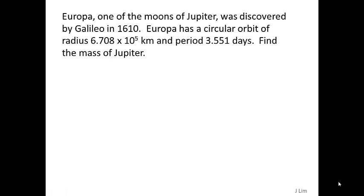Europa, one of the moons of Jupiter, was discovered by Galileo in 1610. Europa has a circular orbit of radius 6.708 × 10⁵ kilometers and period 3.551 days. Find the mass of Jupiter.